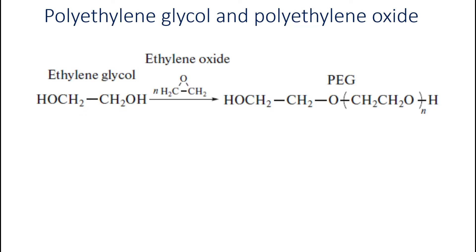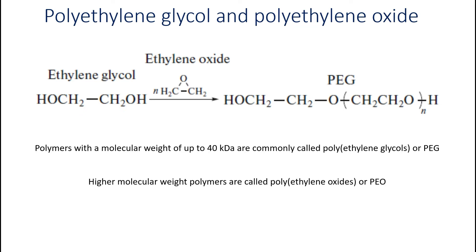According to this scheme, at present PEG is synthesized in industry by the anionic ring-opening polymerization of ethylene oxide, initiated by the nucleophilic attack of a hydroxide ion on an epoxy ring. Polymers with molecular weight of up to 40 kilodaltons are commonly called polyethylene glycols or PEG, and higher molecular weight polymers are called polyethylene oxide or PEO.